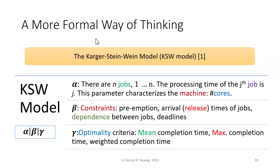Looking at a theoretical model, let us consider the classic paper by Karger, Steyn, and Bean — a survey published in 2010 covering scheduling comprehensively. They propose the KSW model with three parameters: alpha, beta, and gamma. They claim that any scheduling problem can be specified in terms of these three parameters.